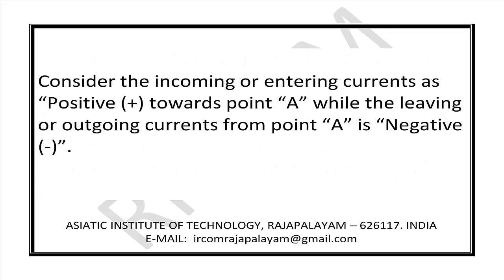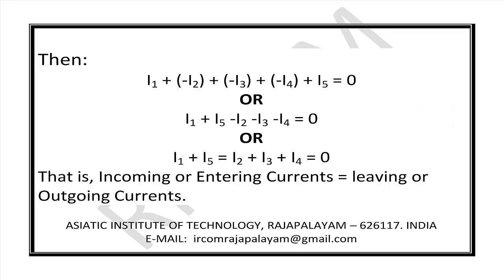In the system, consider the incoming or entering currents as positive towards a point A, while the leaving or outgoing currents from point A are negative. Then: I1 + I2 + (-I3) + (-I4) + I5 = 0. Or: I1 + I5 - I2 - I3 - I4 = 0. That is, incoming or entering currents equal leaving or outgoing currents.